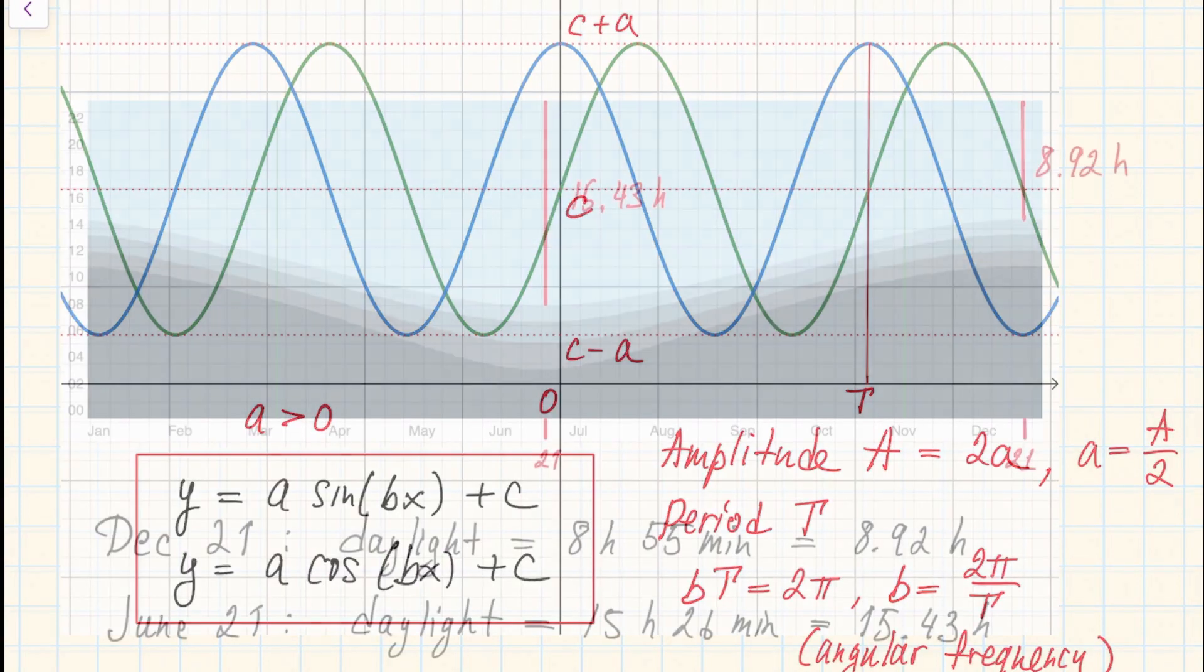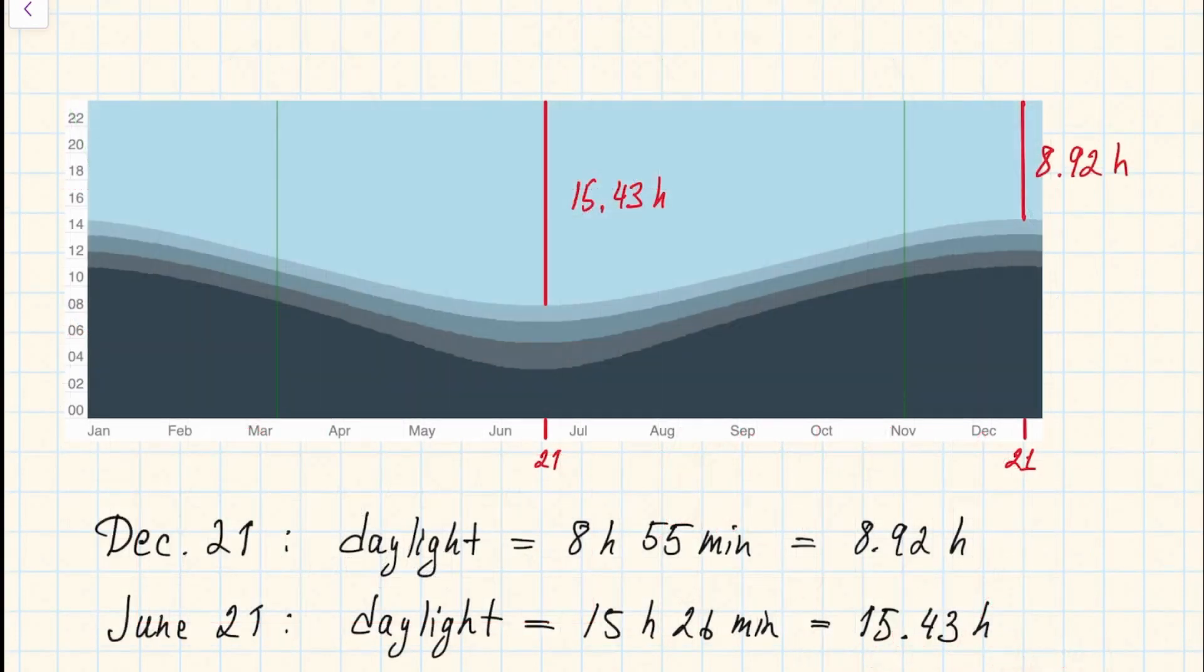Now in this example we will look at daylight in Toronto. We can see that the longest day is on June 21st when the daylight is 15 hours and 26 minutes, or translating it into hours is 15.43 hours.